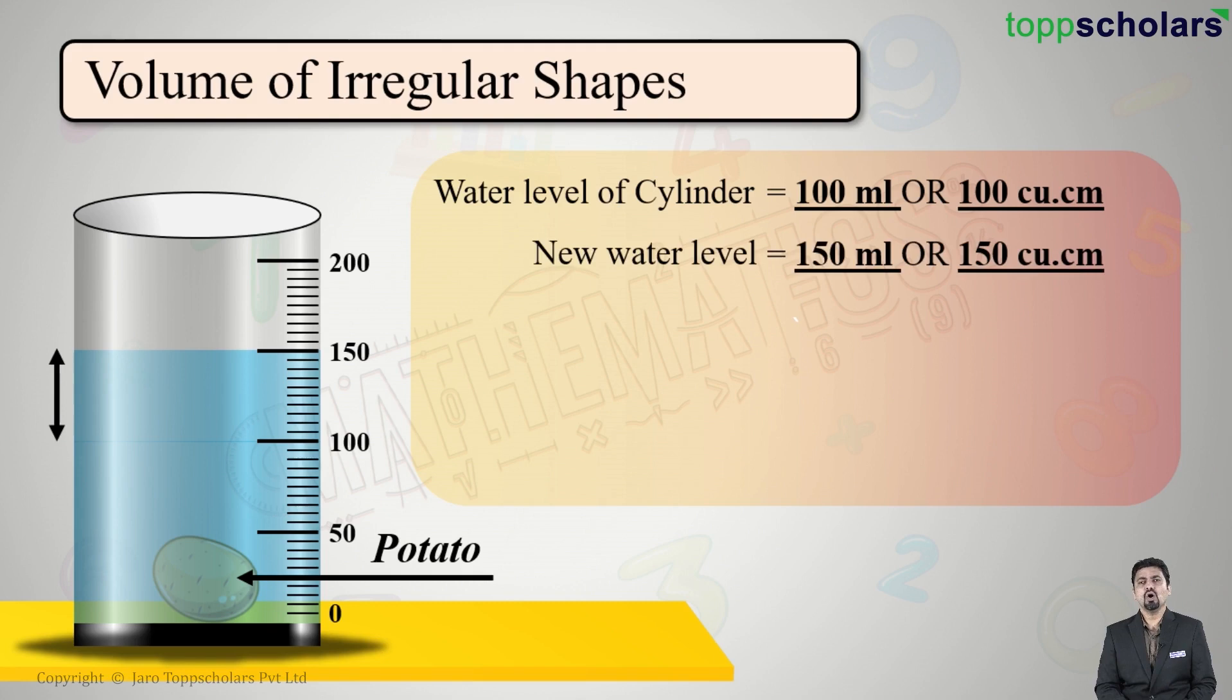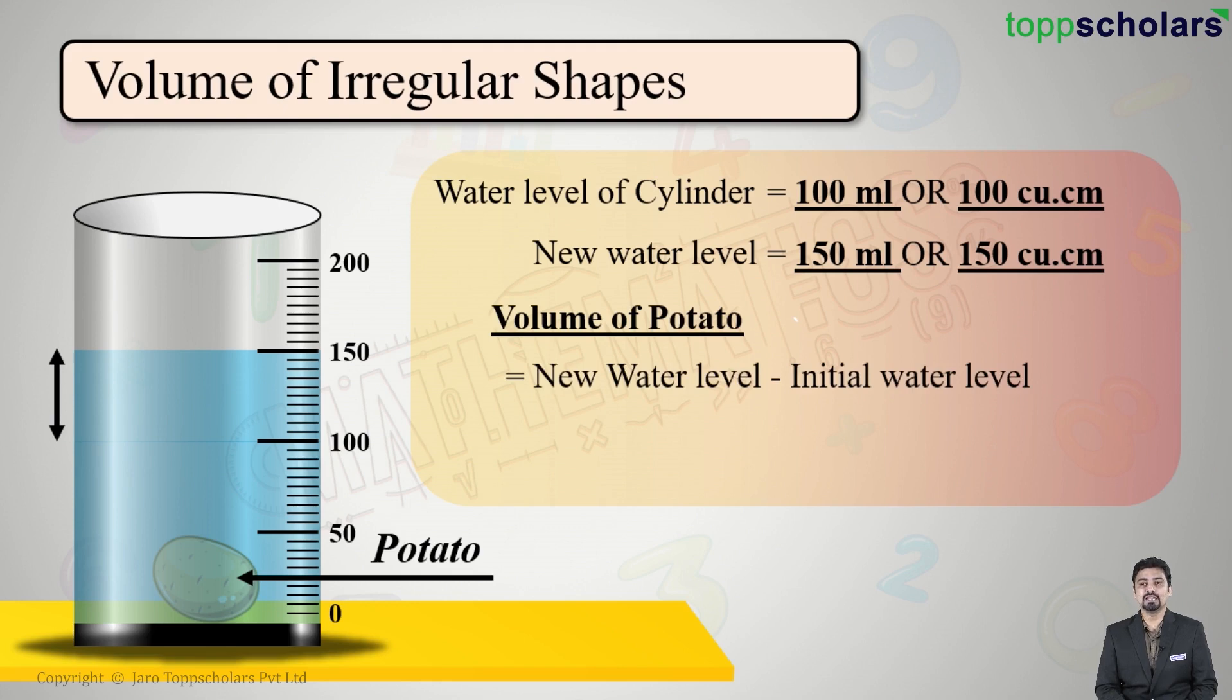Or can I say the total volume of water as well as the potato is 150 cubic centimeters? That means volume of water was 100 cubic centimeters and the total volume of water plus the object is 150 cubic centimeters.